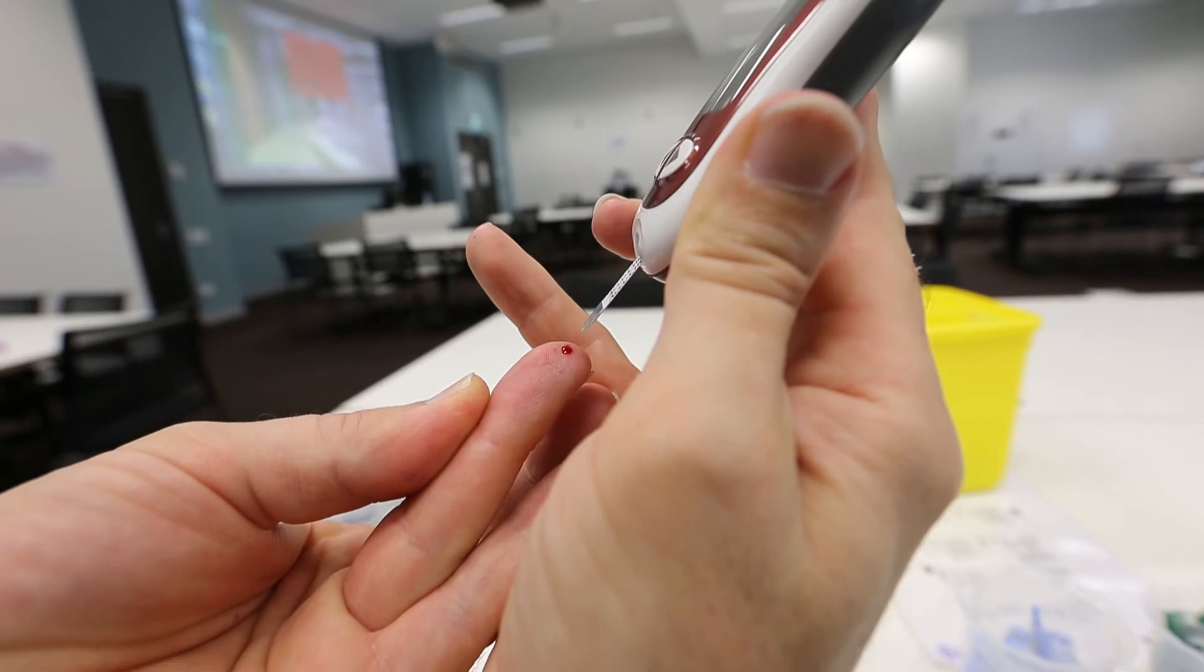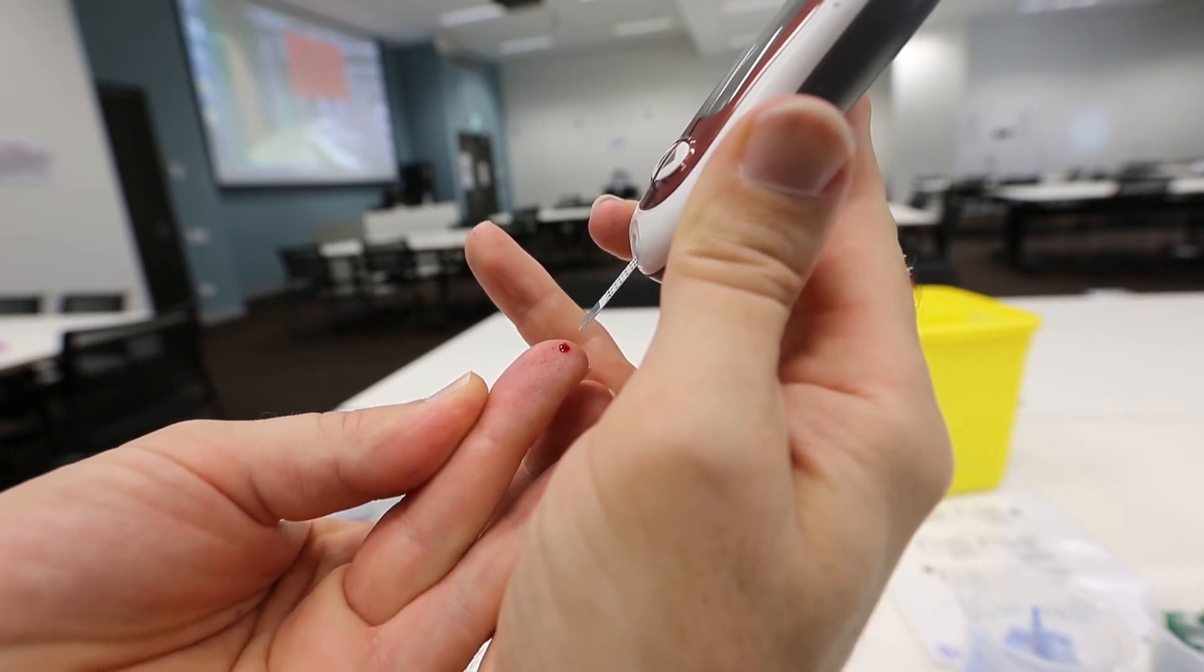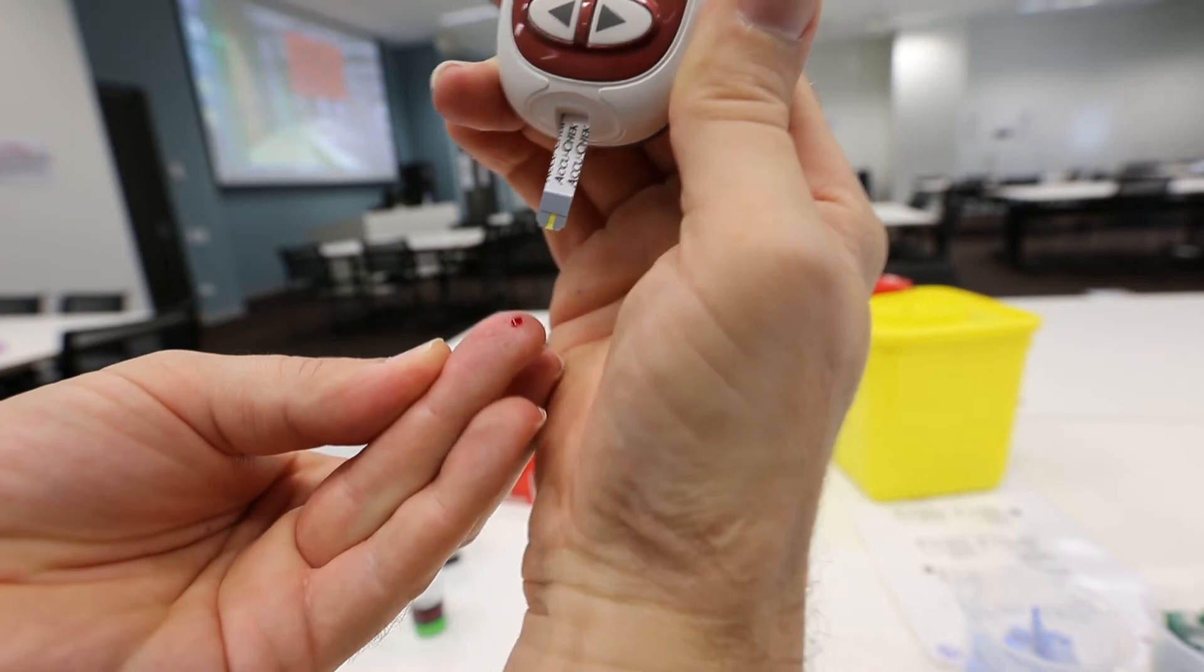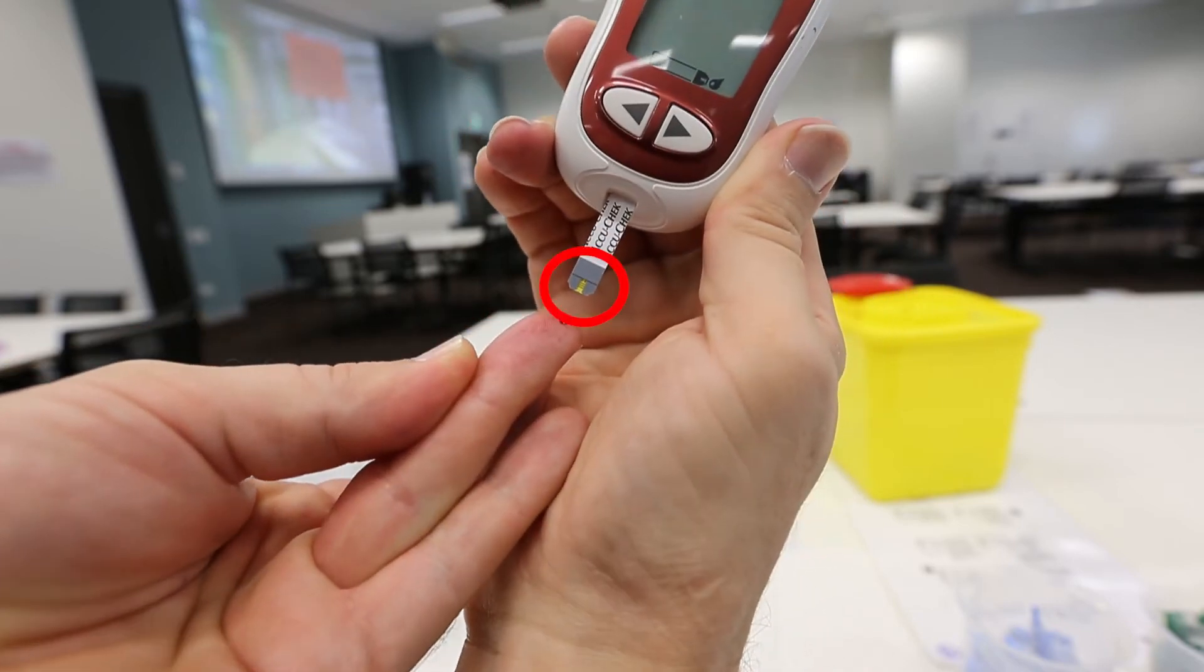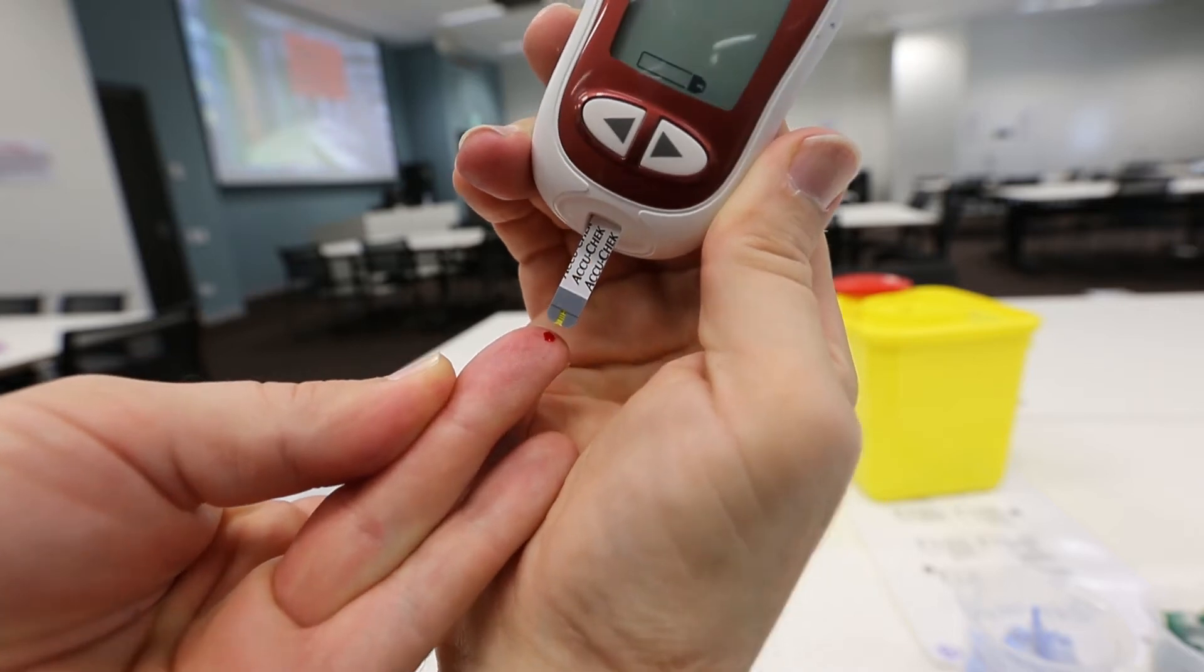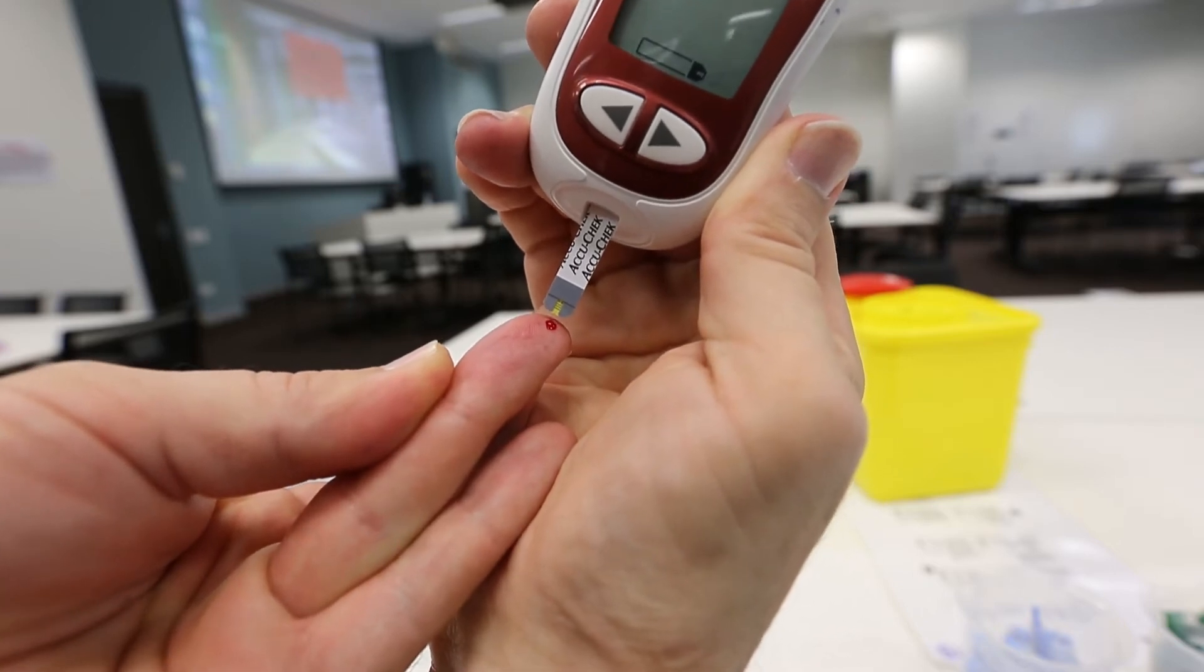To collect blood, touch the end of the test strip perpendicularly against the drop of blood that you have created. There is a plastic window over the yellow test stripe and blood will be drawn into the test area by capillary action. Watch carefully, and you will see the blood drawn up here.